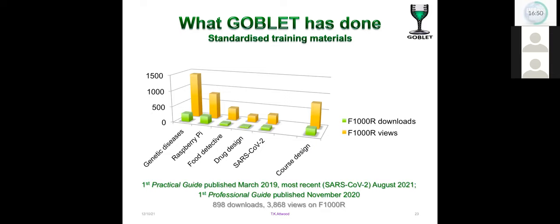So here are the statistics for the five practical guides published between March 2019 and August this year alongside the first professional guide which was published in November 2020. The most viewed and downloaded practical guide is the one on using bioinformatics to understand genetic diseases that was Marie-Claude's first guide. The most recent is the one on SARS-CoV-2 which again you heard about from Marie-Claude yesterday. For me what's interesting is that the professional guide to course design which was published more than 18 months after the first practical guide already has more or less the same viewing and download statistics as the power of computers in biology which is essentially an introduction to the raspberry pi so this seems to suggest that there's an appetite for the professional guides for trainers.